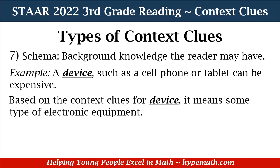The next context clue we want to talk about is schema — this means background knowledge the reader may have. In our example: 'A device such as a cell phone or tablet can be expensive.' Based on our knowledge of cell phones and tablets, we know that a device can be some type of electronic equipment. That was background knowledge you could use to understand what a device is.